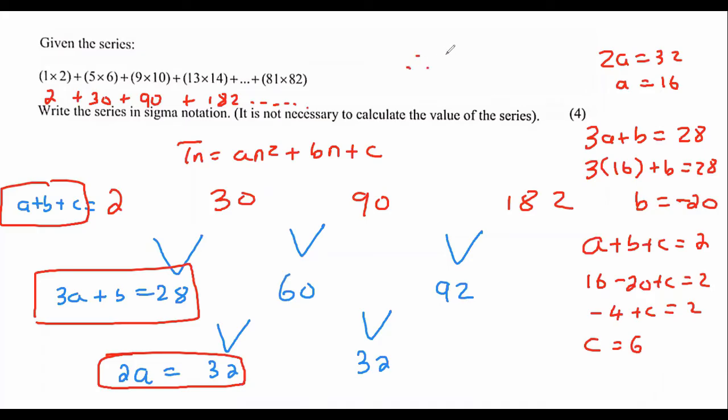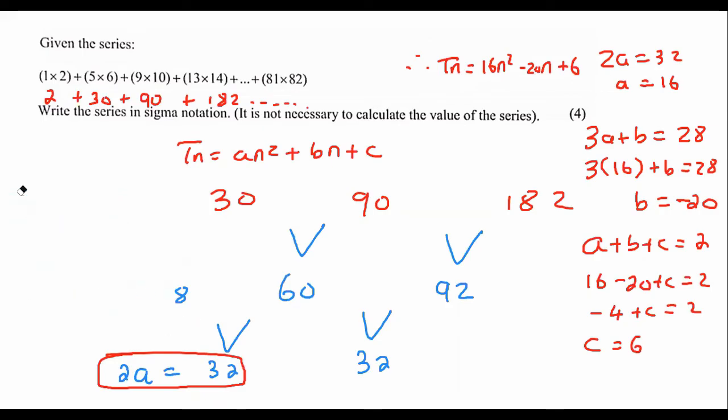And so therefore, tn must be equal to 16n squared minus 20n plus 6. I'm just going to check it quickly. Yeah, it works. There we go, guys. Now we can fill in the sigma.